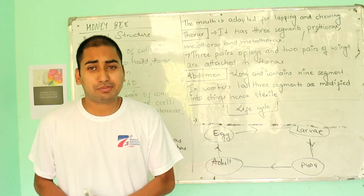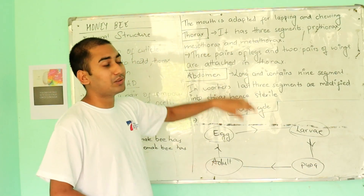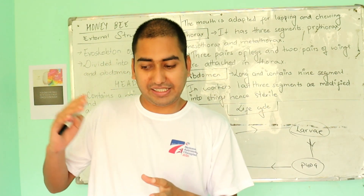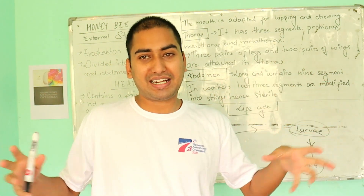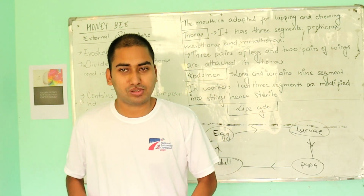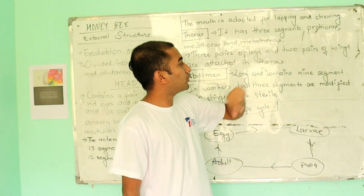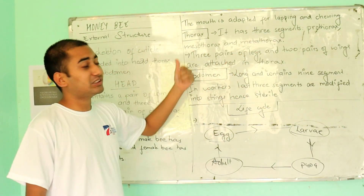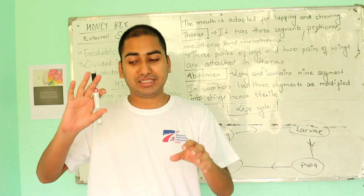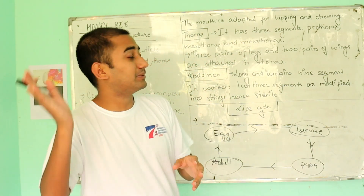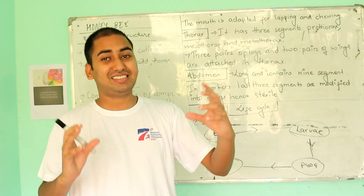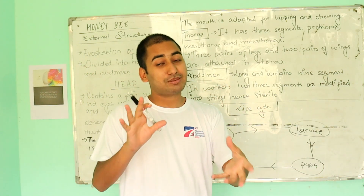Now we have the thorax part. The thorax has 3 segments and is attached to the head and the abdomen. The 3 segments are: the first one is the prothorax, then the mesothorax, and the other one is the metathorax.